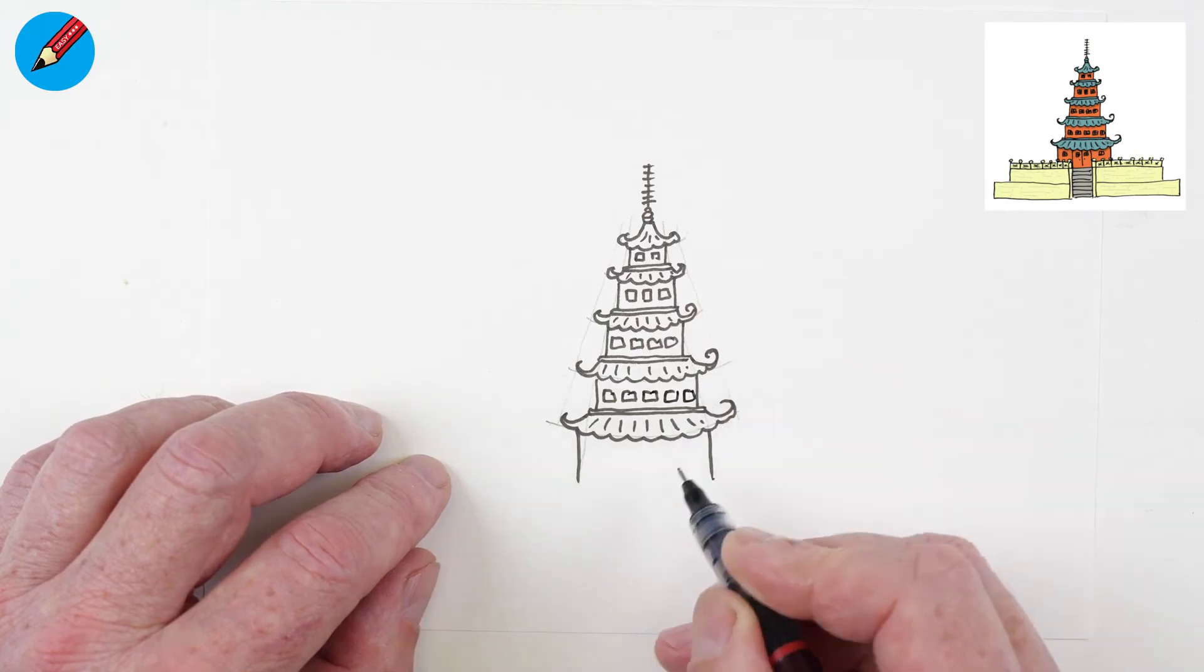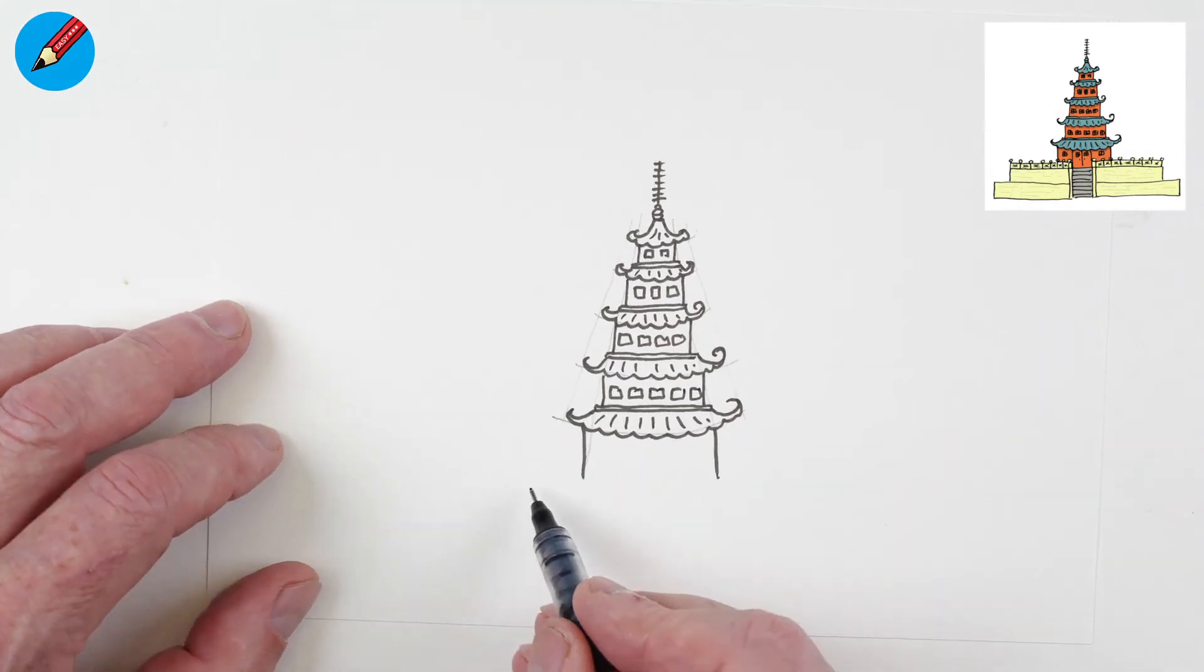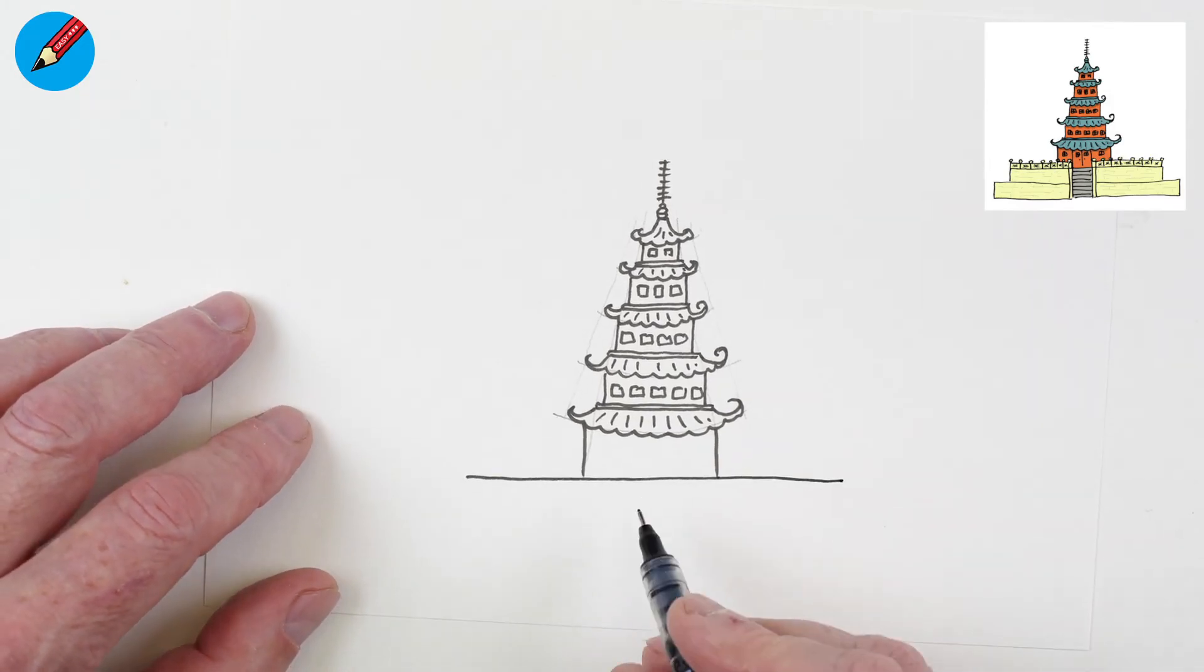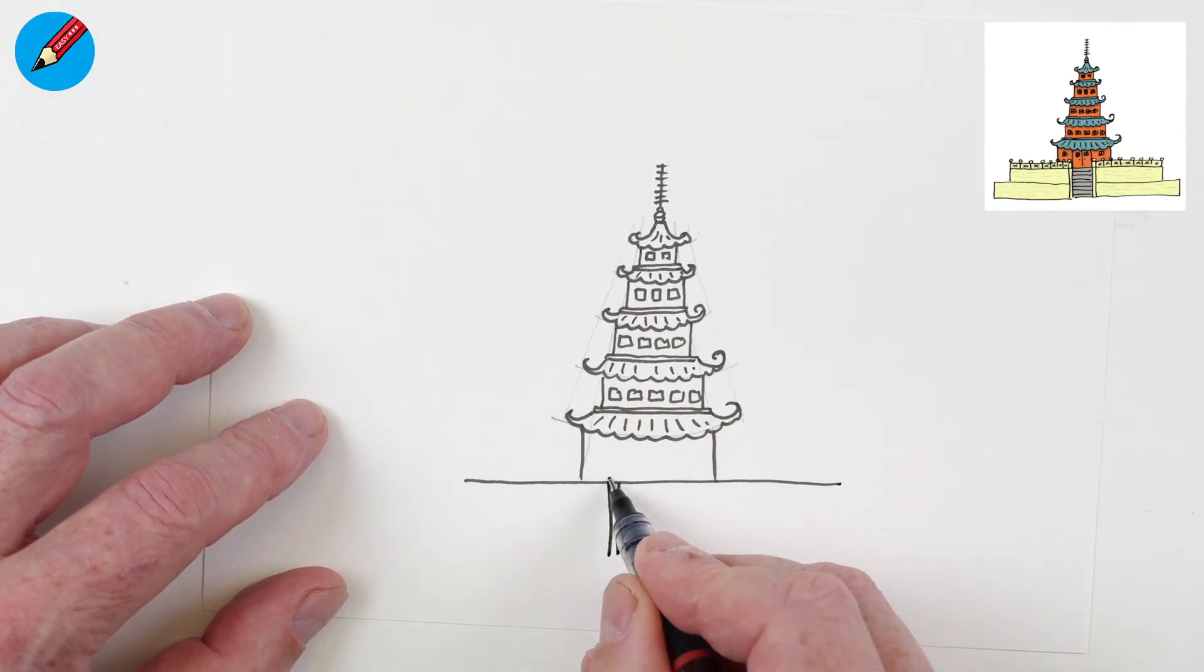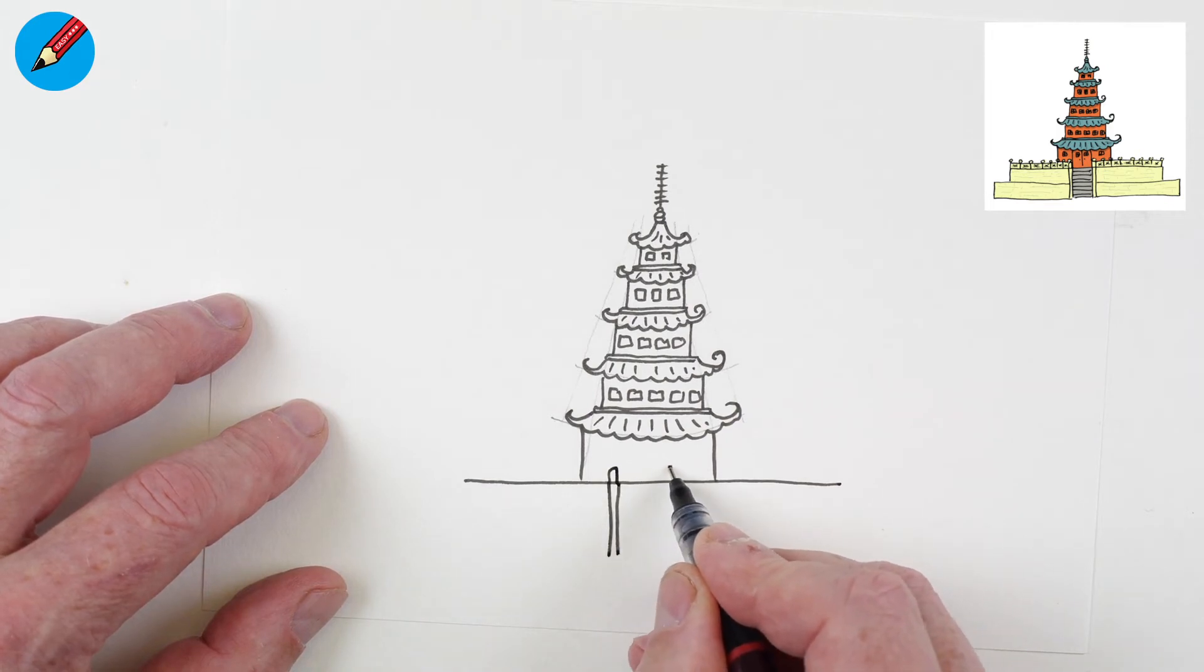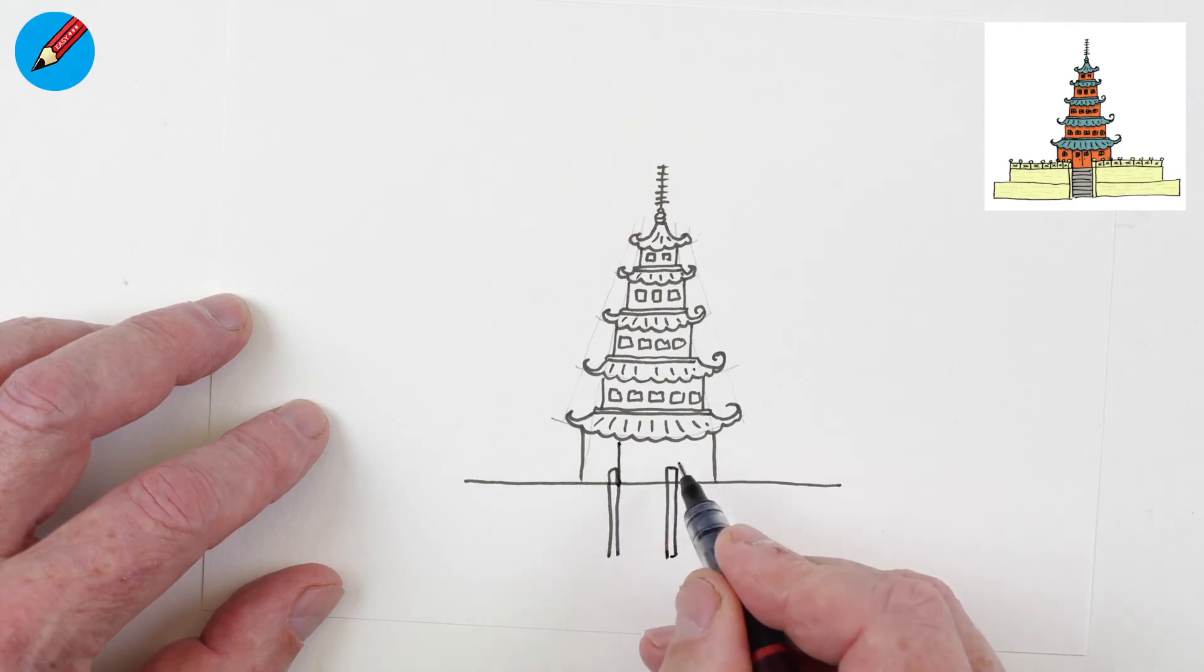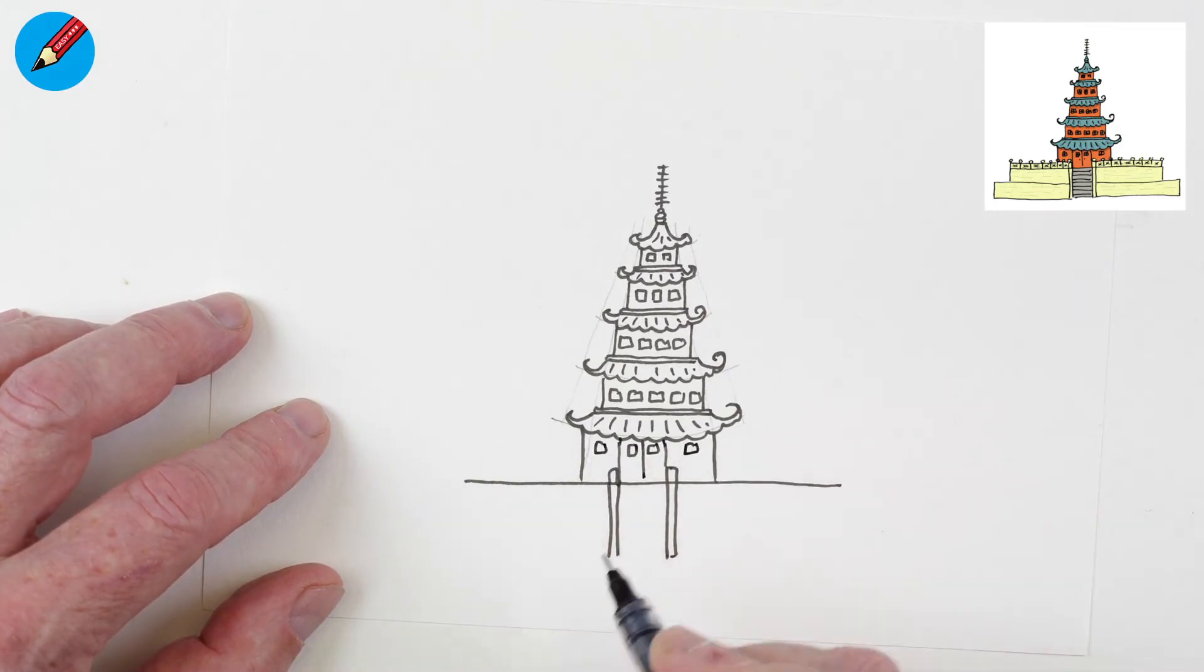And what about the next—no, don't, stop, because this is where it gets a bit more complicated. Now we need to draw the base. It's going to go right the way across, and here we're going to have two lines coming down. So this is going to be like the staircase coming up to the doors. We've got little windows in the doors, and we'll have a window there and a window there.